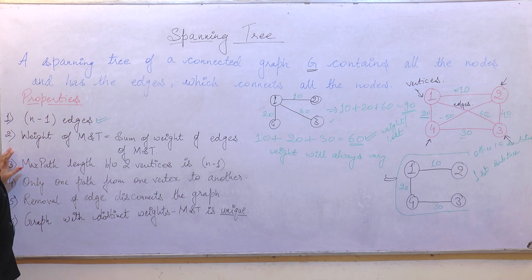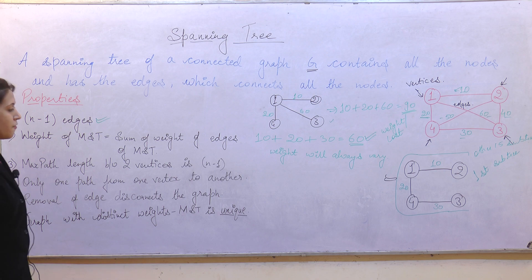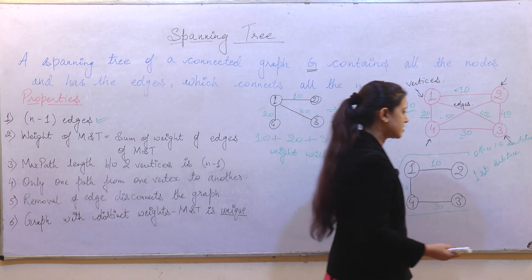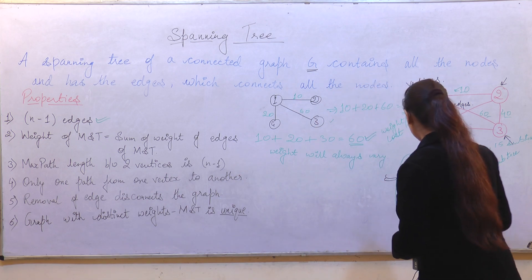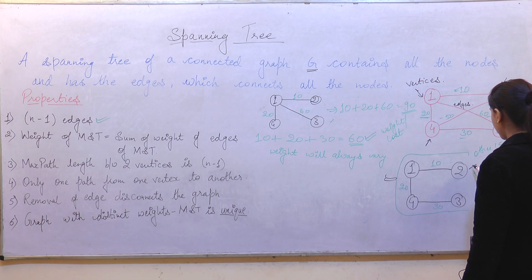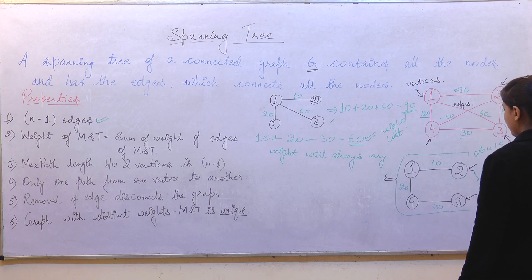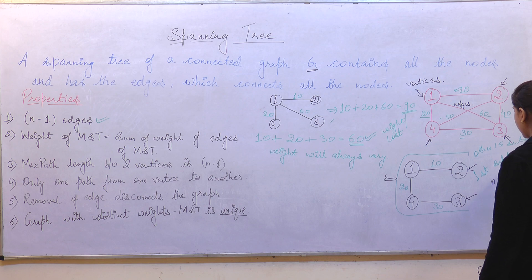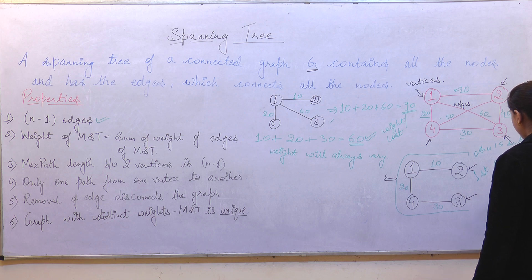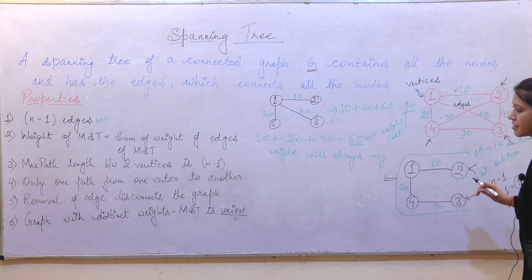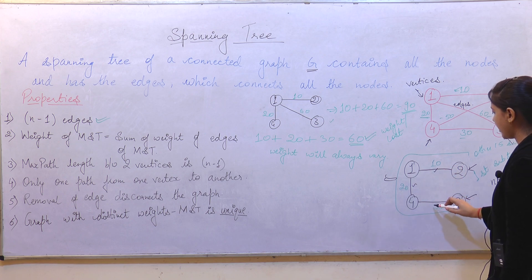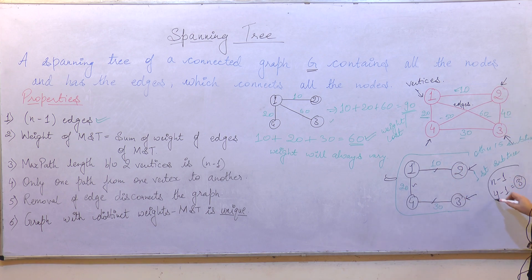Coming to the third property: maximum path length between two vertices. The maximum path length between any two vertices is always given by the formula n − 1. With n = 4 nodes, the maximum path length is 4 − 1 = 3. This means 3 edges are used to connect all four vertices, and this property is fulfilled.